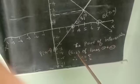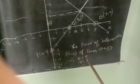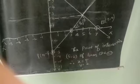The point of intersection, 5, 2 of lines 1 and 2. Therefore, the value of x is equal to 5 and y is equal to 2.